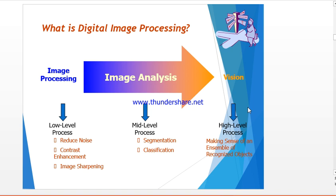The second is mid-level processing, which involves segmentation — that is, partitioning an image into regions or objects — along with description of those objects to reduce them to a form suitable for computer processing, and classification, which is the recognition of individual objects. Mid-level processing is characterized by the fact that its inputs are generally images but outputs are attributes extracted from those images.